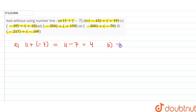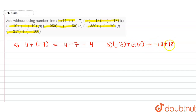Part B is –13 + (+18). Plus plus is plus, so this is equal to –13 + 18. The sign will be of the greater one, so plus minus — 18 – 13 is 5. Our answer is +5.